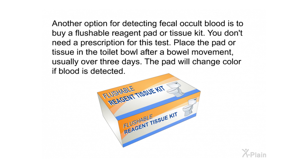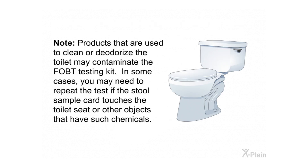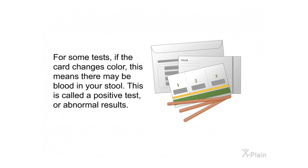Another option for detecting fecal occult blood is to buy a flushable reagent pad or tissue kit — no prescription is needed. Place the pad or tissue in the toilet bowl after a bowel movement, usually over three days. The pad will change color if blood is detected. Note: products used to clean or deodorize the toilet may contaminate the FOBT testing kit. In some cases, you may need to repeat the test if the stool sample card touches the toilet seat or other objects containing such chemicals.